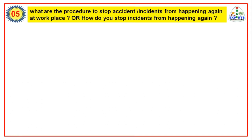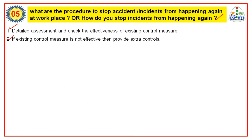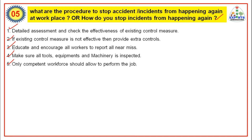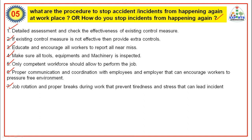Fifth question: What are the procedures to stop accident incidents from happening again at the workplace? This is also a very important question the interviewer asks repeatedly. Conduct a detailed assessment and check the effectiveness of existing control measures. If existing control measures are not effective, provide extra controls. Educate and encourage all workers to report all near misses. Make sure all tools, equipment and machinery are inspected on a daily basis. Only competent workforce should be allowed for the job. Ensure proper communication and coordination with employees and employer to encourage a pressure-free environment. Job rotation and proper breaks during work can prevent tiredness and stress that can lead to incidents.